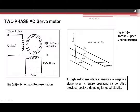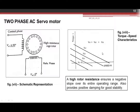High rotor resistance ensures a negative slope over the entire operating range and also provides positive damping for good stability. The torque-speed characteristics show Va1 > Va2 > Va3, with the curve for Va = 0 passing through the origin — linear characteristics with a negative slope. This is the torque-speed characteristic of a typical two-phase AC servo motor.